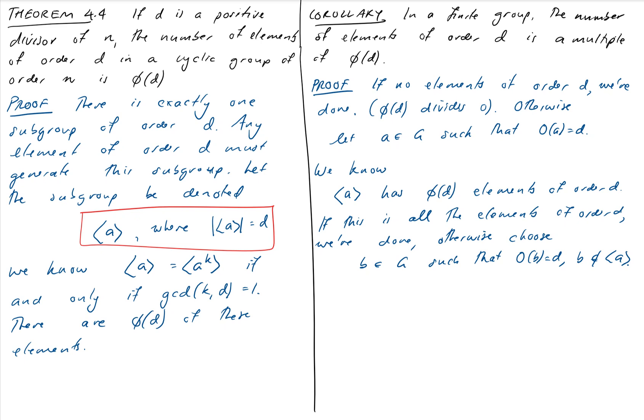So we've plucked out another element of order D, and we've specified that it's not in the cyclic subgroup that we already have. So we want to show that there can't be any elements of order D in common between these, because if there were, then we wouldn't have a multiple of phi of D anymore. So hopefully, there are phi of D elements of order D in this cyclic subgroup generated by B also, so that we now have two lots of them. So we need to show that there is no element of order D in both A and B. So again to do this, we'll suppose there is one.